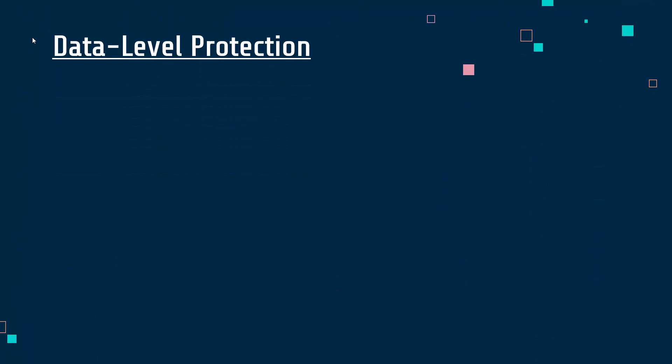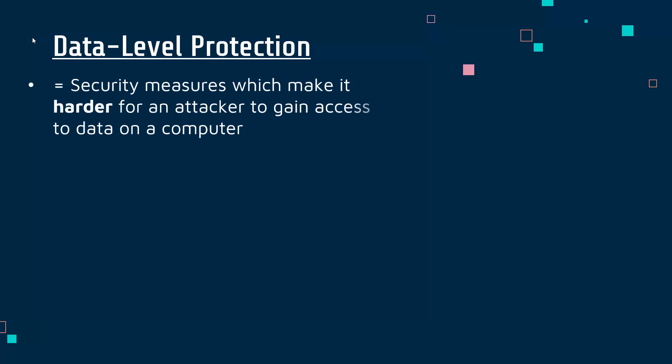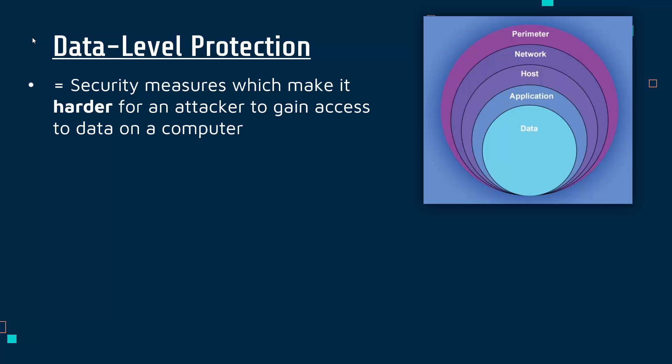We're going to look at what we call data level protection methods. The definitions do vary a little bit for different models of security measures, but it's really worth looking at how we are able to make things harder for an attacker to gain access to data on a computer. We can often think of security being like an onion with different layers — outer layers like perimeter security and physical security, then network security like firewalls, then host security on individual computers, then application security. Right in the middle we have our data, and data is often our most valuable asset because so many businesses rely on data being used, processed, and sold. Also, new legislation means big fines can be imposed if data is not stored securely, so that inner layer is so important for companies to protect.